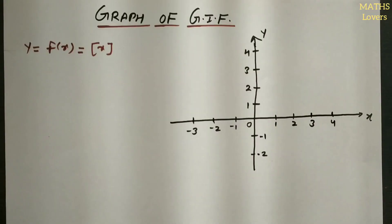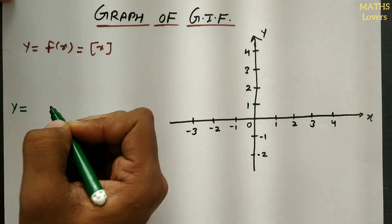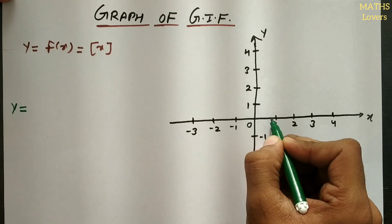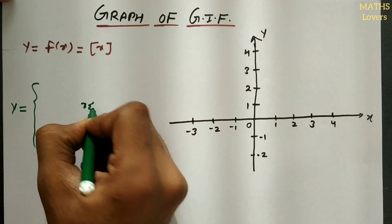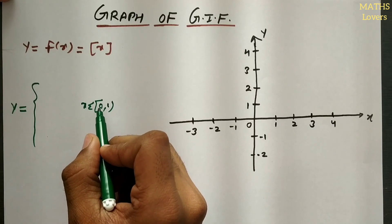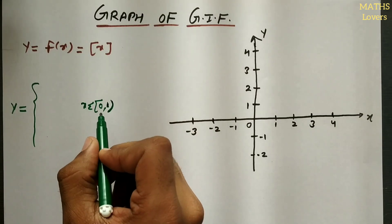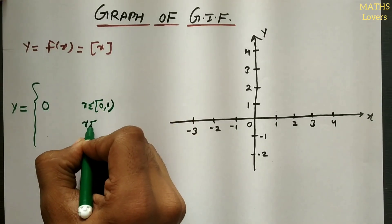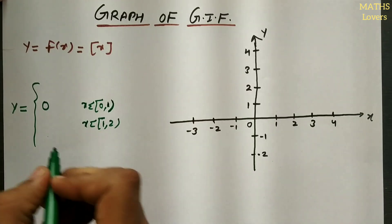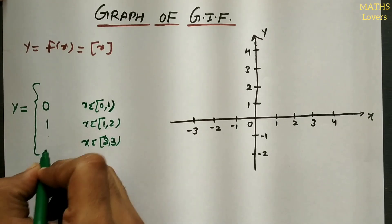Now let's draw the graph of y = [x]. If x belongs to [0, 1), the greatest integer of x is 0 — we include 0 but not 1, because at x = 1 the greatest integer becomes 1. So for x in [0,1), y = 0. Similarly, for x in [1, 2), y = 1, and for x in [2, 3), y = 2.